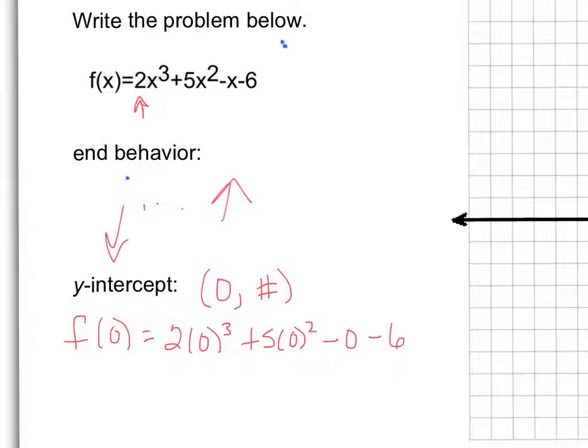So if I plug a 0 in for the x's, I have f(0), which is 2 times 0 cubed plus 5 times 0 squared minus 0 minus 6. What are you noticing happening? Yep. Same thing as a quadratic in standard form. Anytime you plug a 0 in, the last number is your value. So your y-intercept here is 0, negative 6.